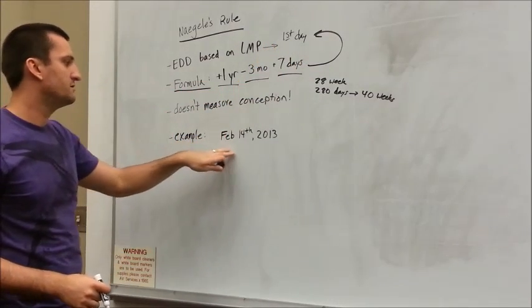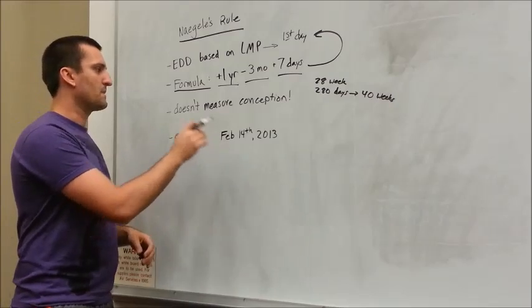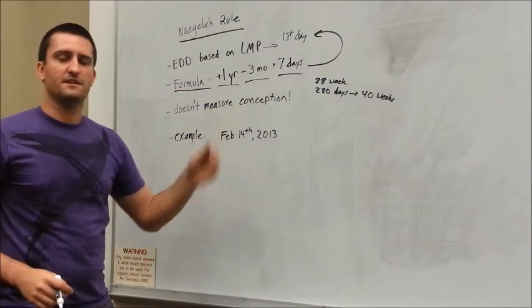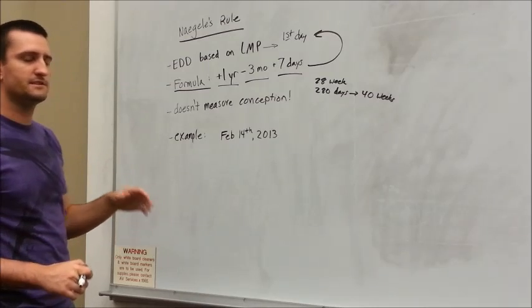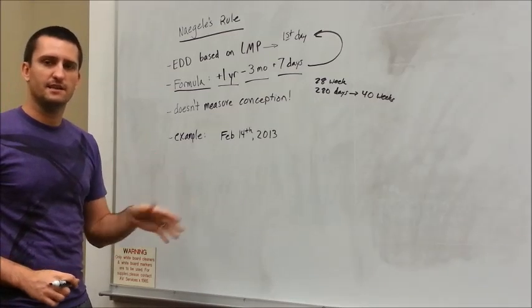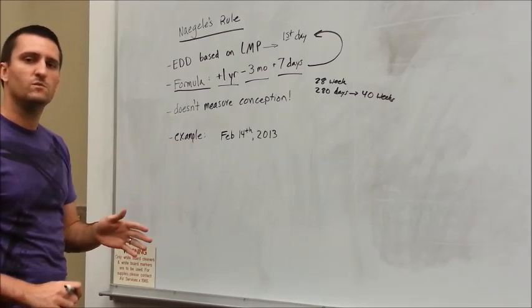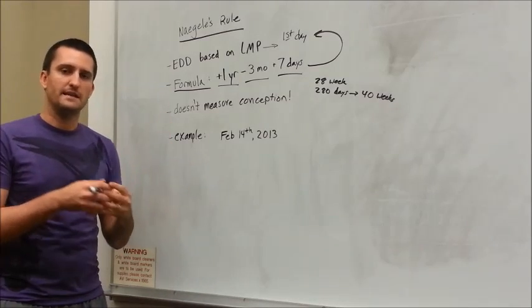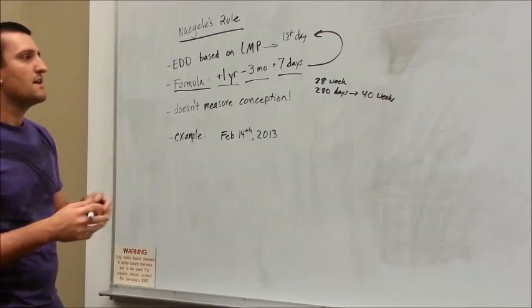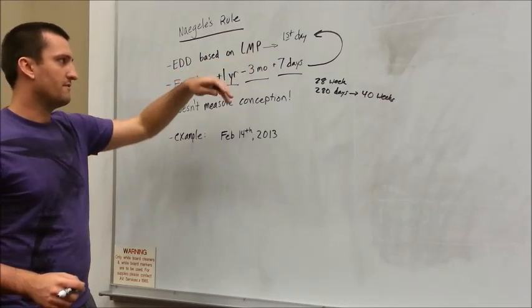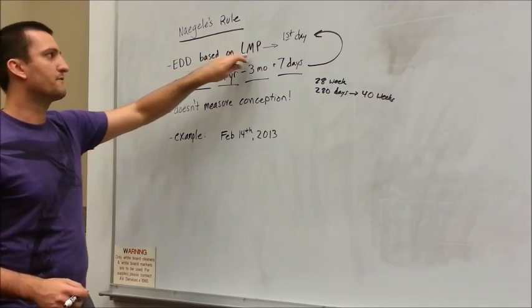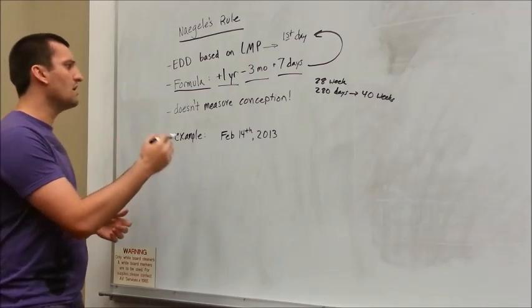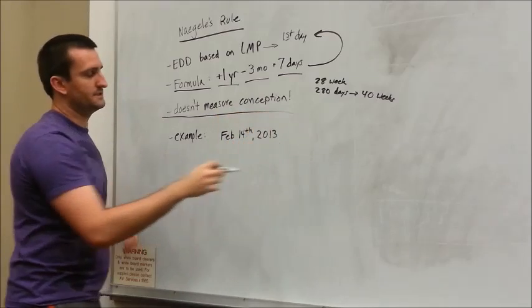Now, I'm going to come down here to an example. But I want to note prior to that, it doesn't measure the date of conception. Remember, the date of conception is day 14 in the woman's cycle when the LH surge happens and the egg is released, when the egg and sperm meet. That's not the date we're basing it off of. We're basing it off of the first day of her last menstrual period. So an important rule: Naegele's rule does not measure conception.